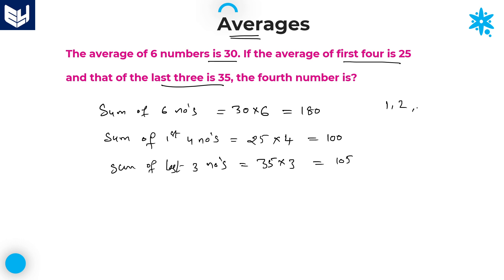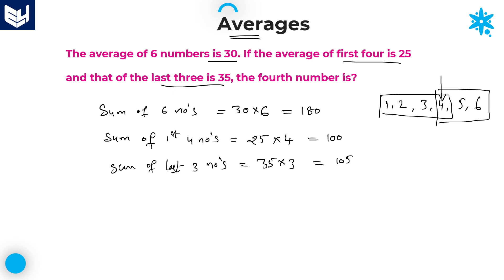If you observe carefully, we have 6 numbers total. The first 4 numbers are positions 1, 2, 3, 4 and the last 3 numbers are positions 4, 5, 6. In the first 4 and last 3, one value is common — that is the fourth number. So if we add these two sums, we get 7 numbers total. Subtracting the sum of 6 numbers from that total gives us the fourth number.